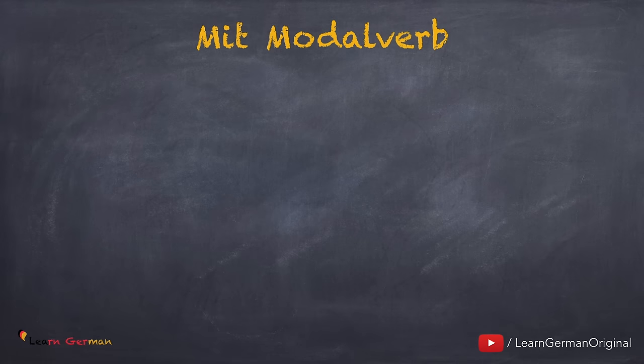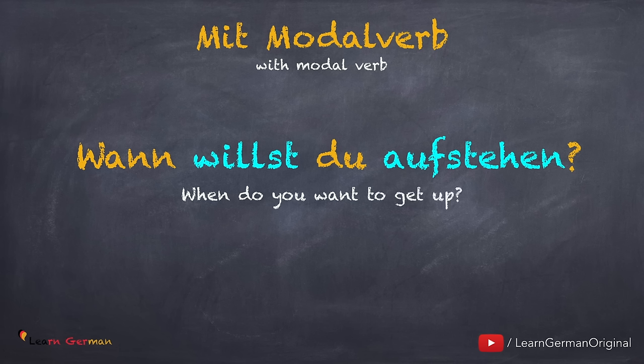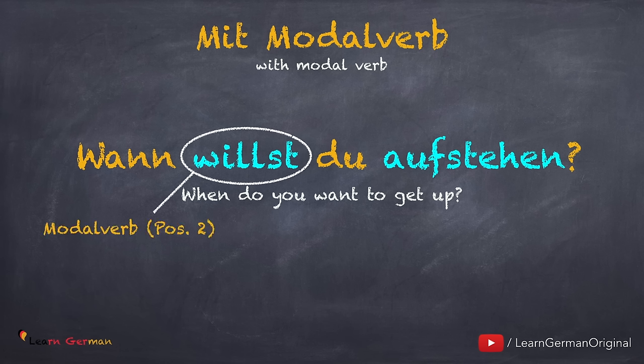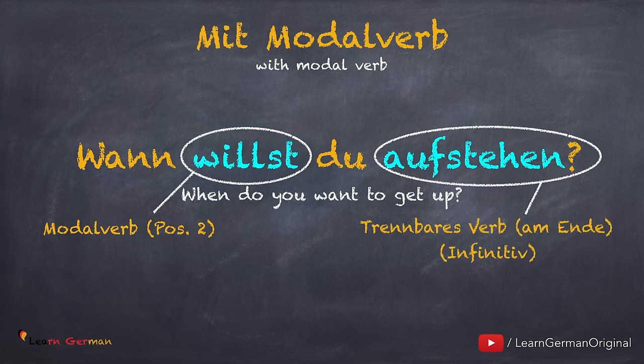What happens when we use a modal verb in the sentence? 'Wann willst du aufstehen?' In this case the conjugated modal verb is in the second position whereas the trennbares Verb stands at the end and is not conjugated — that means it remains in the infinitive. If you want to revise modal Verben, you can watch our video on modal Verben.